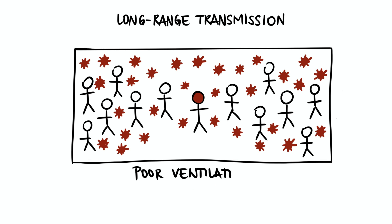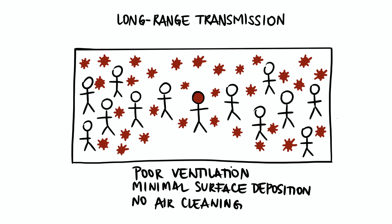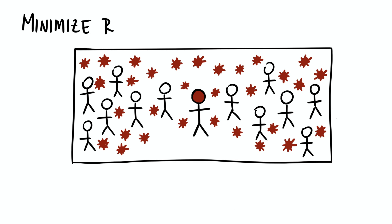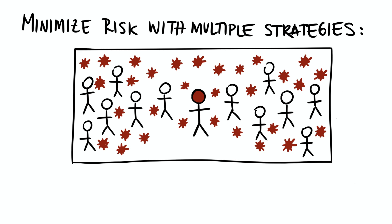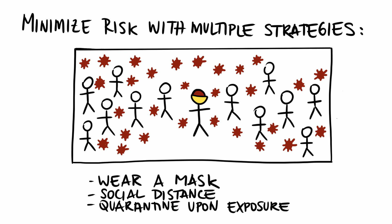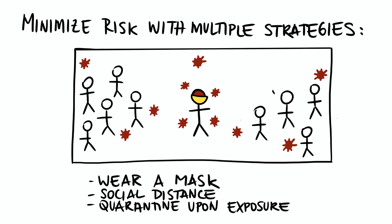The airborne virus begins to spread through the indoor space and builds up to high levels because there is poor ventilation, minimal surface deposition, and no air cleaning. This is important because the way to minimize the risk is with different strategies. You will never prevent short-range aerosol transmission by improving ventilation. The only way to prevent it is by wearing a good-fitting mask, staying socially distanced, and quarantining upon possible exposure and definitely when you start to show symptoms.